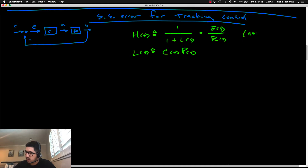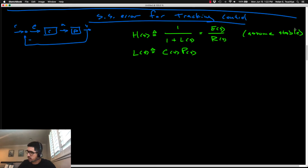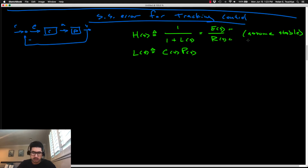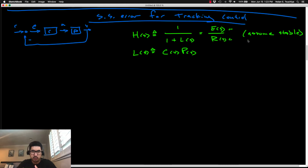We're going to assume H is stable for all the downstream discussion, because if you don't have stability, you can't track anything. So we've introduced two new transfer functions: L, the open-loop transfer function C·P, and H, the transfer function from r to e. With this setup, we're going to connect the concept of system type to the actual tracking control objective, which will help us identify what our controller needs to look like.